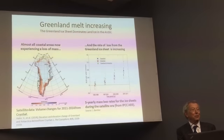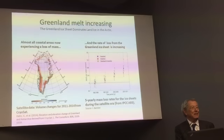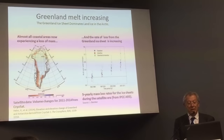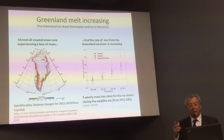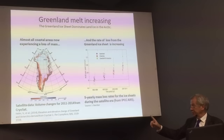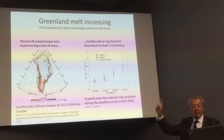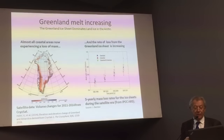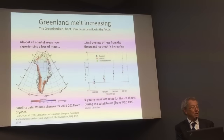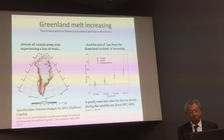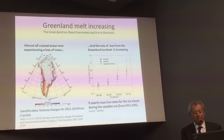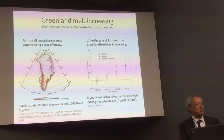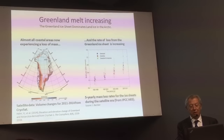I'll come back later to why it's important that we understand the rate of loss of ice from Greenland. But if we just look at the rate of loss of the Greenland ice sheet and how it's increasing, the right-hand curve shows the five-yearly mass loss rates for the ice sheets over the whole period of having satellites up there to measure the rate of loss.